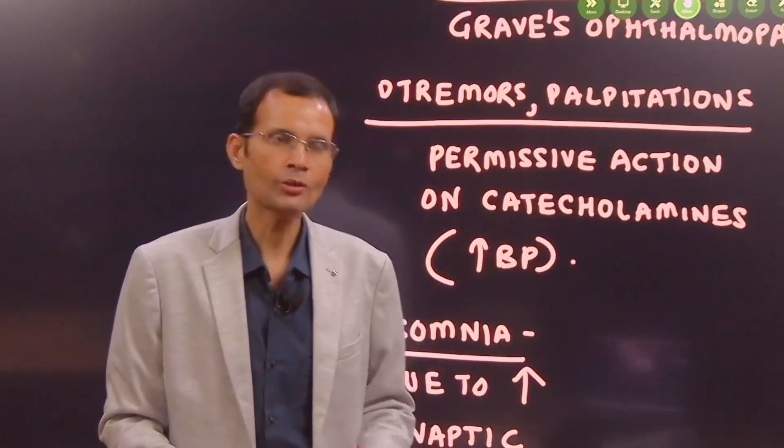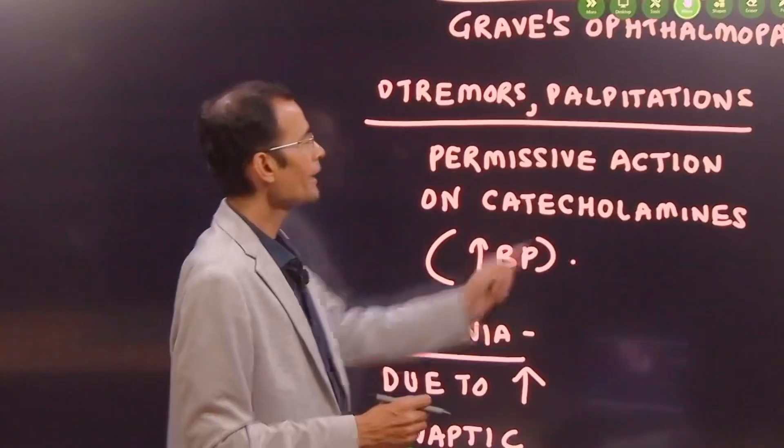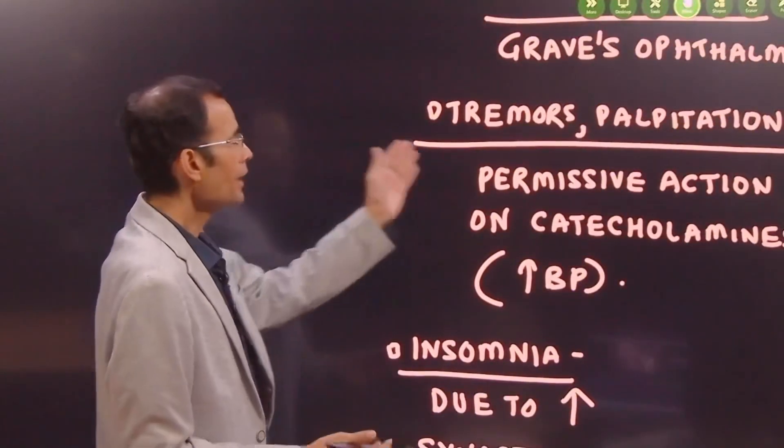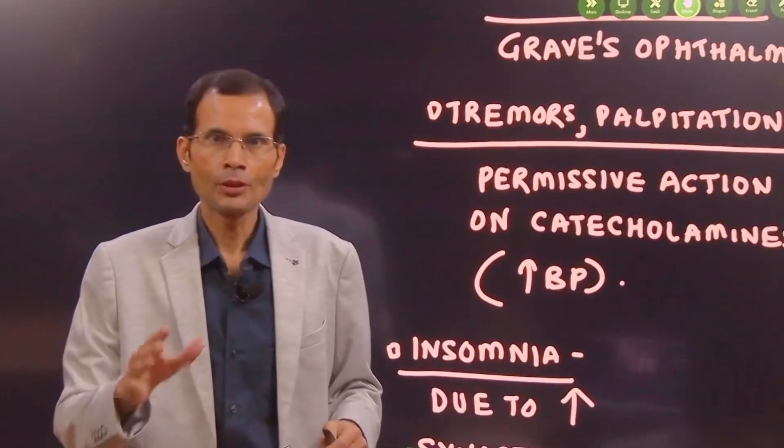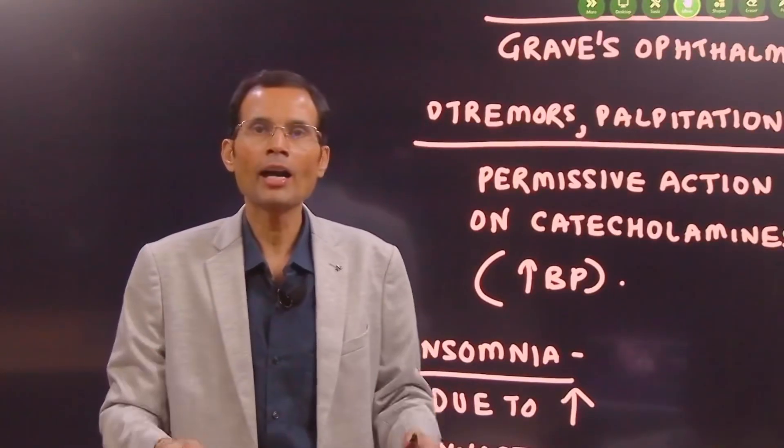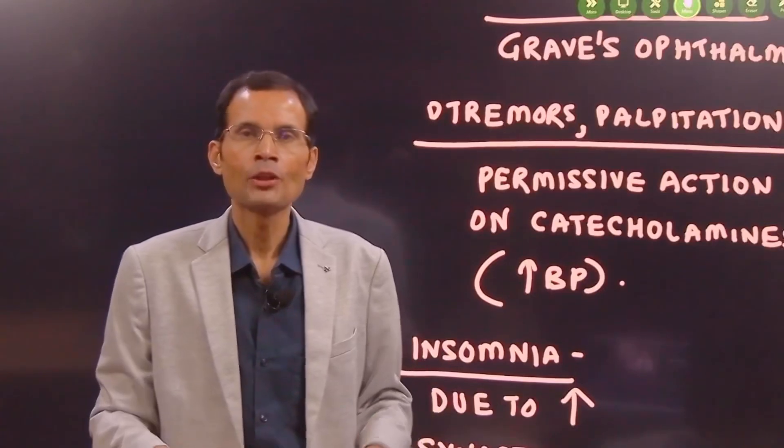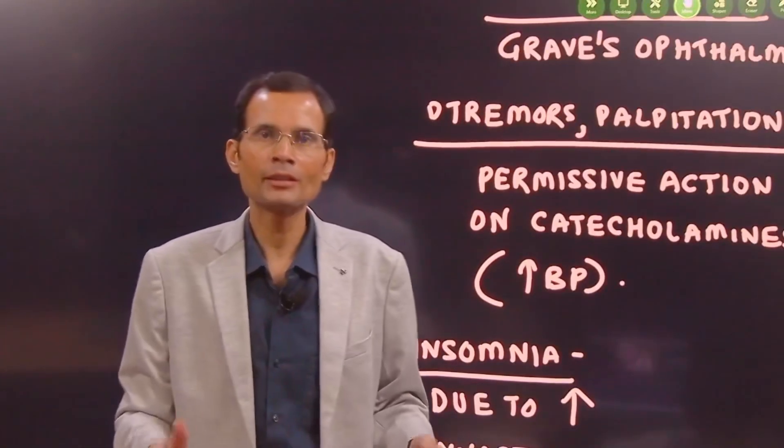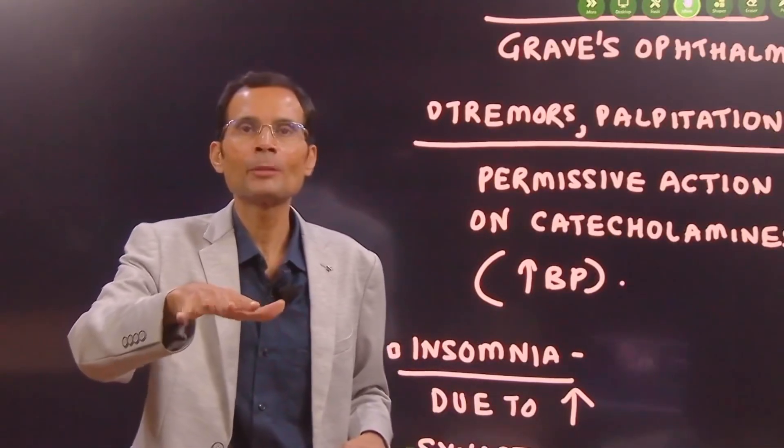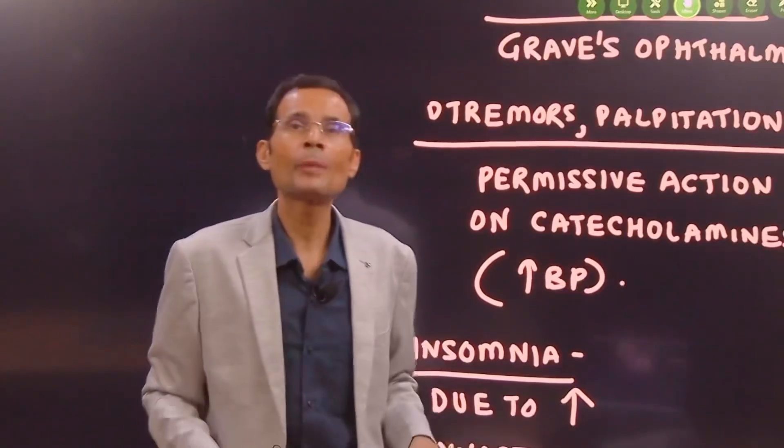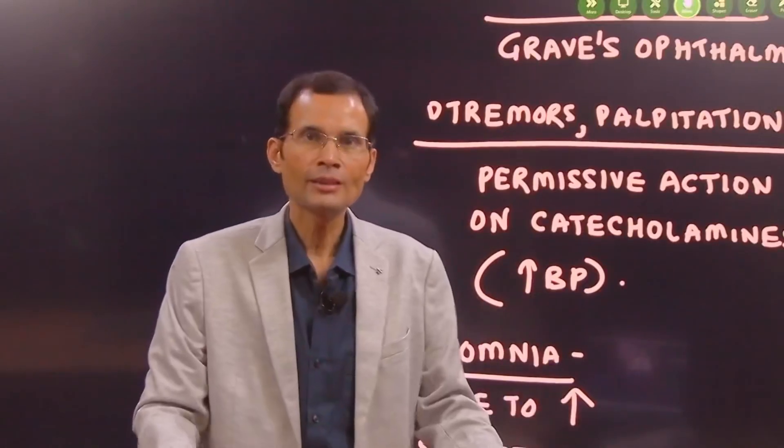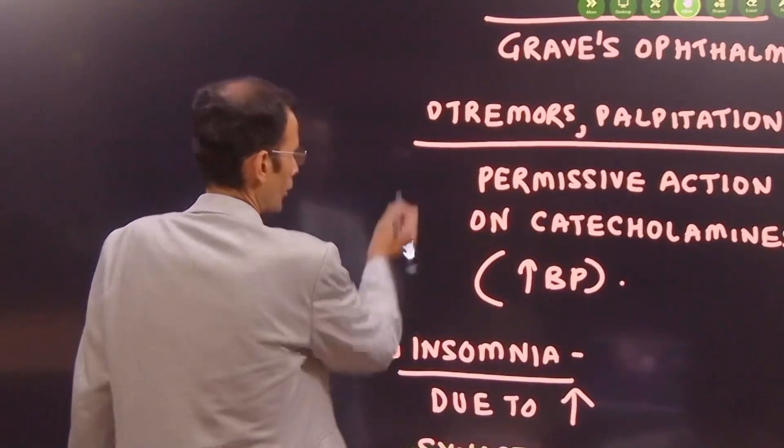And particularly here, why these manifestations are observed is because of the permissive action of the thyroxine on the catecholamines. So, excessive sympathetic discharge or excessive circulating catecholamines, they will increase the heart rate, giving the feeling of palpitations and tremors. Now, this is important. Sympathetic discharge or catecholamines, they act via the beta receptors in the skeletal muscle. To be more precise, beta 2 receptors are found in the muscle. So, catecholamine action via beta receptors is responsible for the tremors of the hands. Remember, in the treatment, they give beta blockers like propranolol to relieve these particular symptoms.